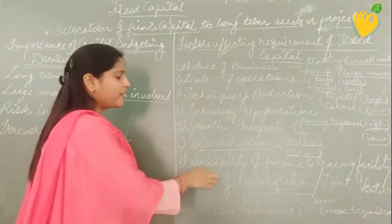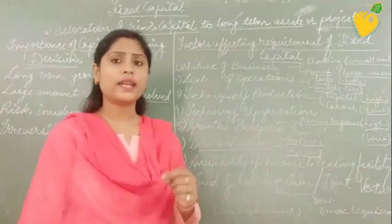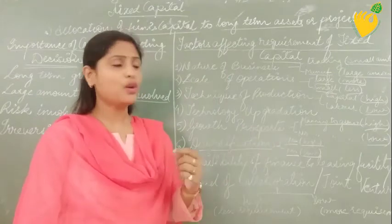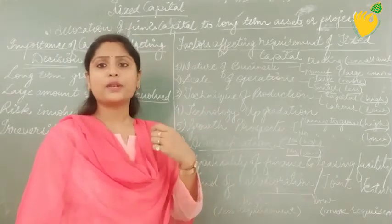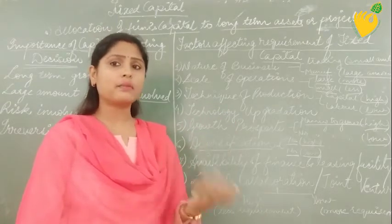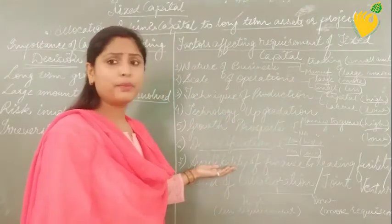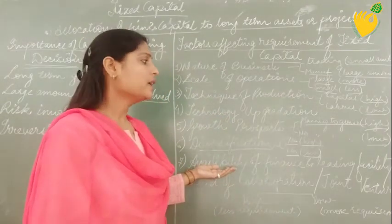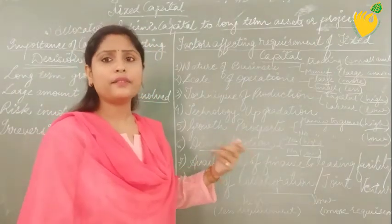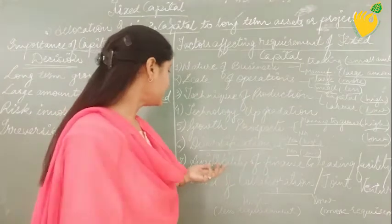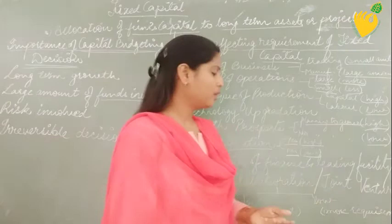Then we have availability of finance and leased facilities. If somebody is helping the company with financing — lending a loan or providing some advanced payment — and that availability of financing is high, the company will be in need of high fixed capital. If there is no financing available, then the requirement is low.